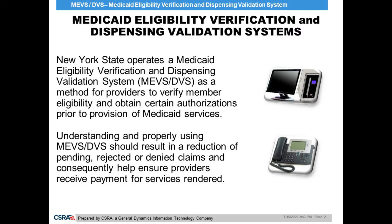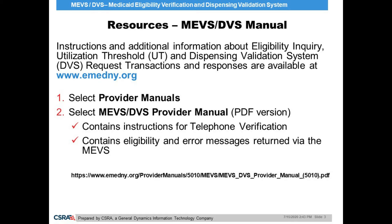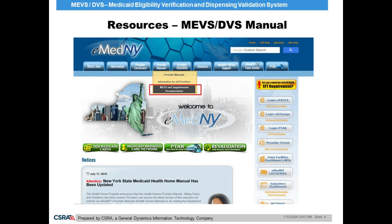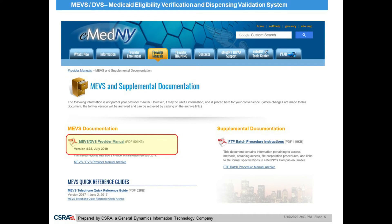The MEVS DVS Provider Manual will assist providers in interpreting the results received on an eligibility response. The manual is conveniently located online at the eMedny.org website. By going to the Provider Manual tab, you will then select the third option under the drop-down menu stating MEVS and supplemental documentation. You will find the current link to the MEVS DVS Provider Manual on the left-hand side of the page, as seen here.